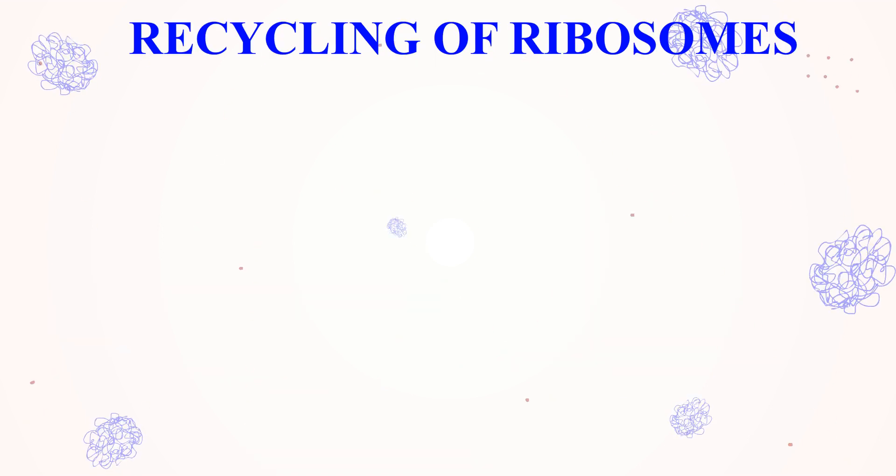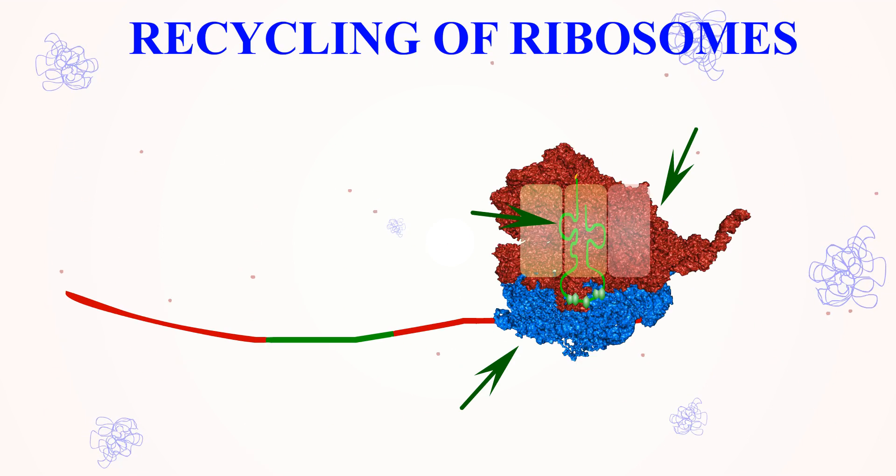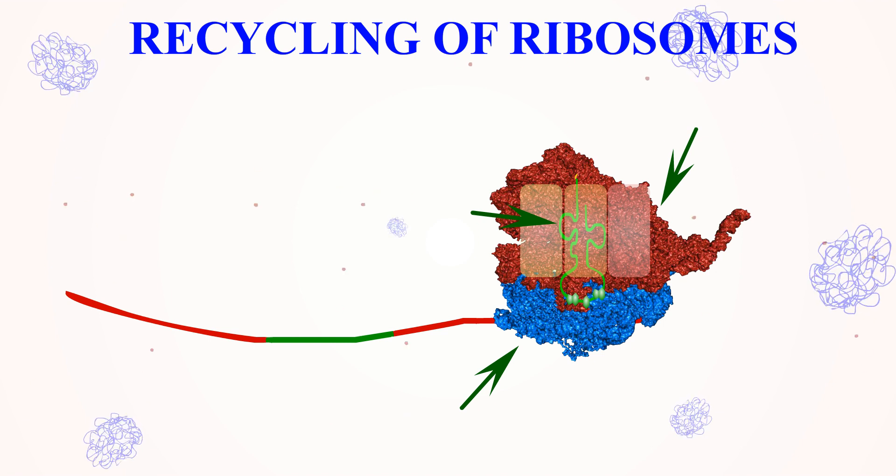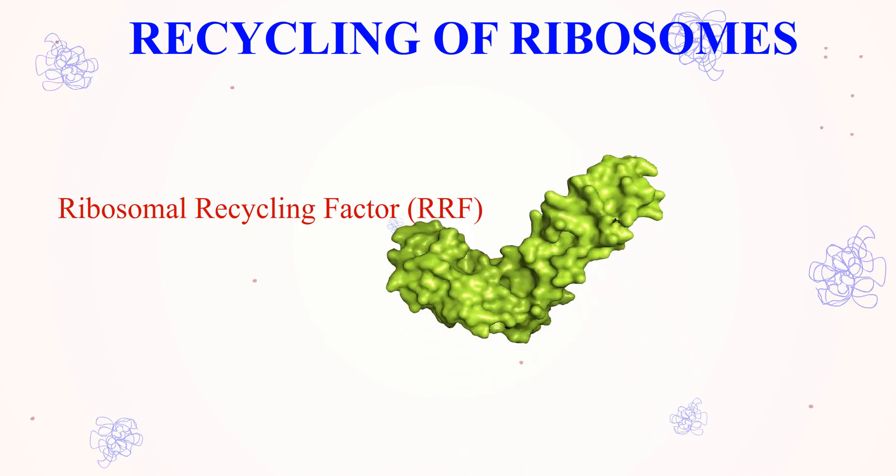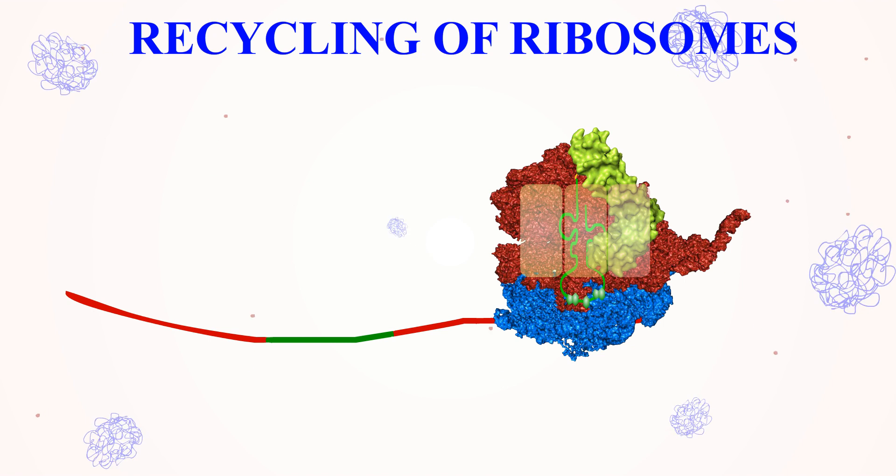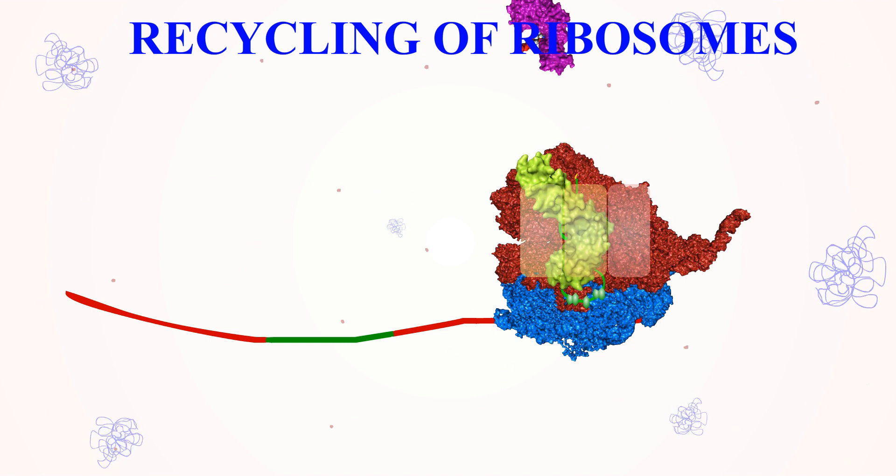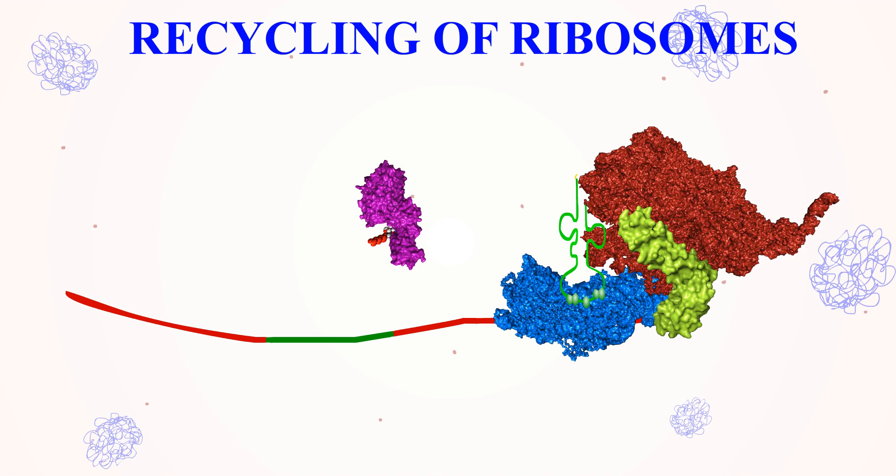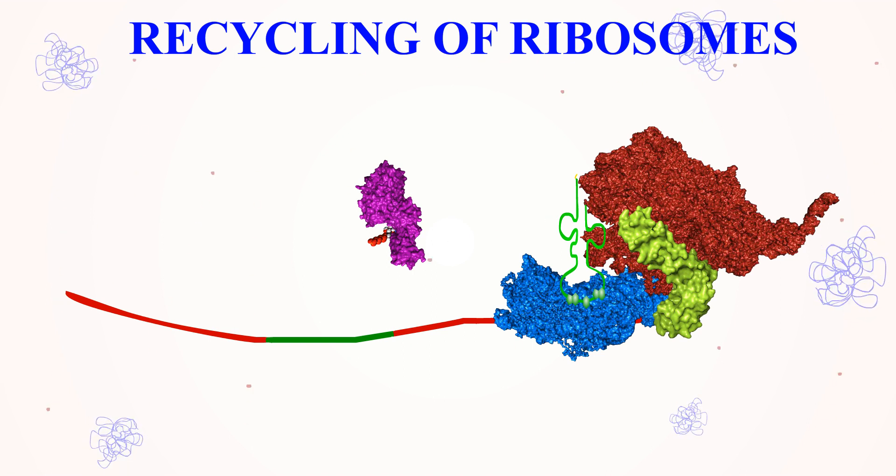Recycling of ribosomes: The ribosome still attached to the mRNA and tRNA after termination is released with the help of the ribosomal recycling factor (RRF) and EF-G. The RRF binds to the A-site of the ribosome. The EF-G, with the help of GTP hydrolysis, pushes the RRF against the key inter-subunit bridge, promoting subunit splitting.